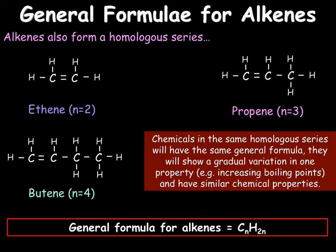As we look at in the homologous series video, chemicals that share a homologous series — so the alkanes as a family or the alkenes as a family — have the same general formula and they show a gradual variation in a property, for example increased boiling points as you get larger. However, they also have similar chemical properties.